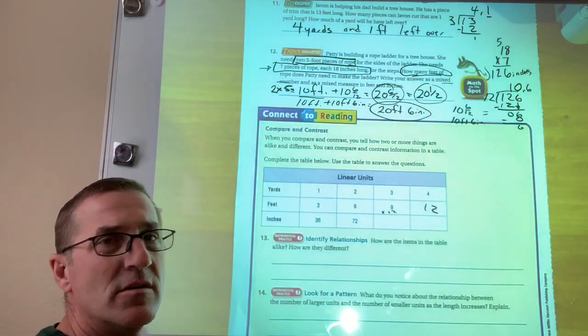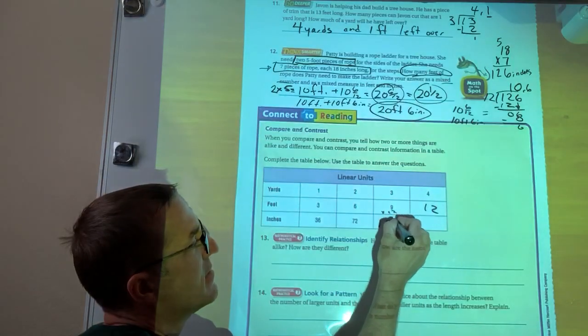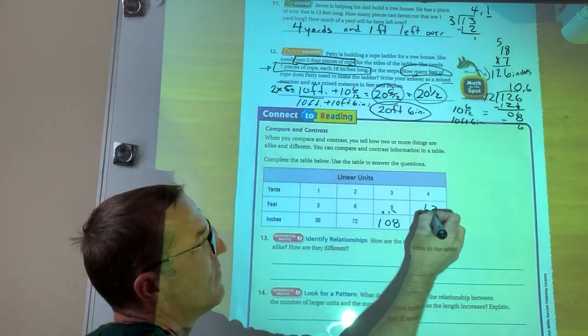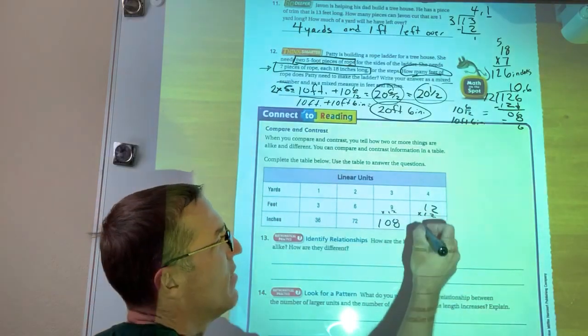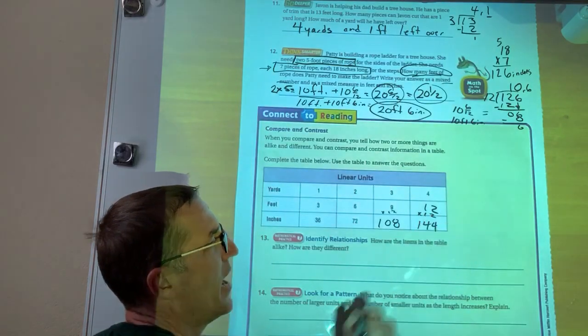Well, what's nine times 12? 108 and 12 times 12, 144. Okay.